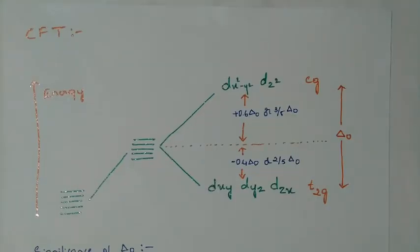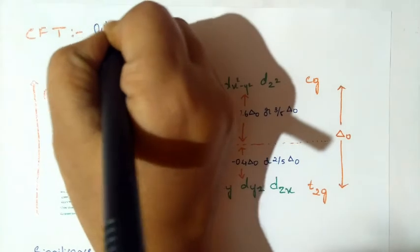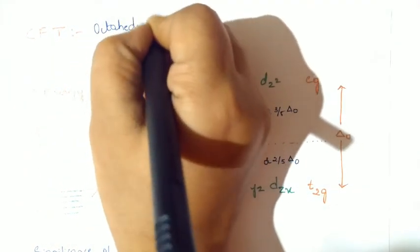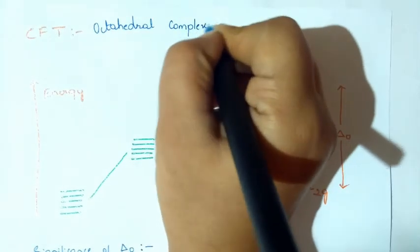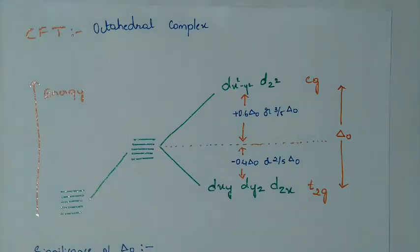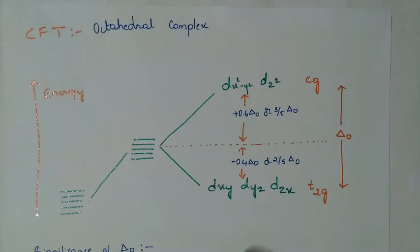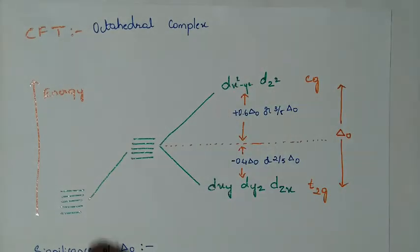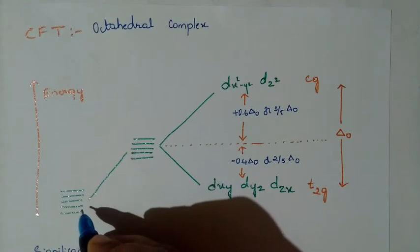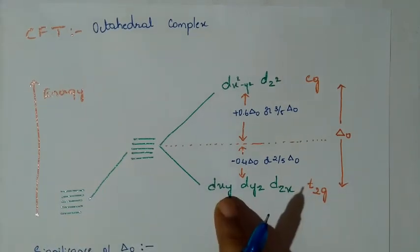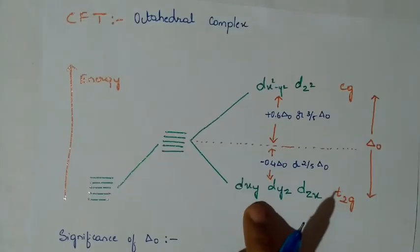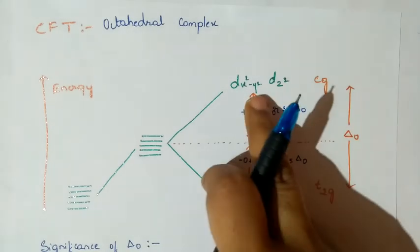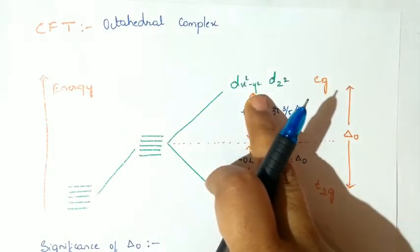Next we move on to Crystal Field Theory (CFT) for the octahedral complex. There are 5 d orbitals: dxy, dyz, dzx, dx²−y², and dz². When a ligand approaches, dxy, dyz, and dzx lie in between the axes, while dz² and dx²−y² lie along the axes.